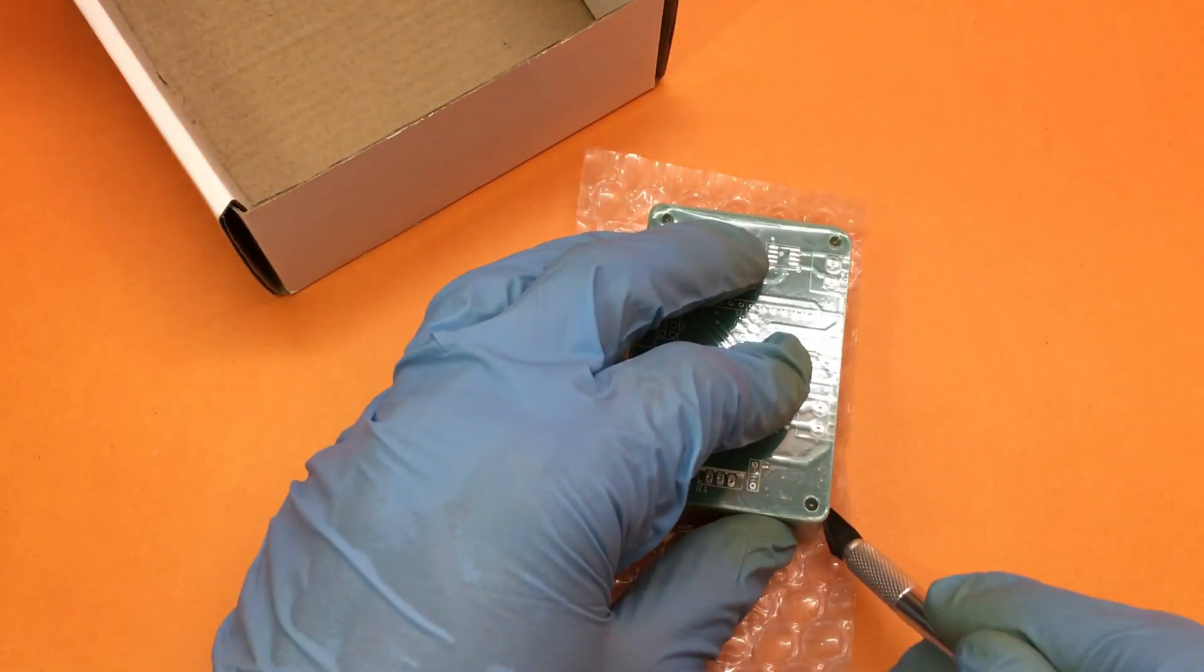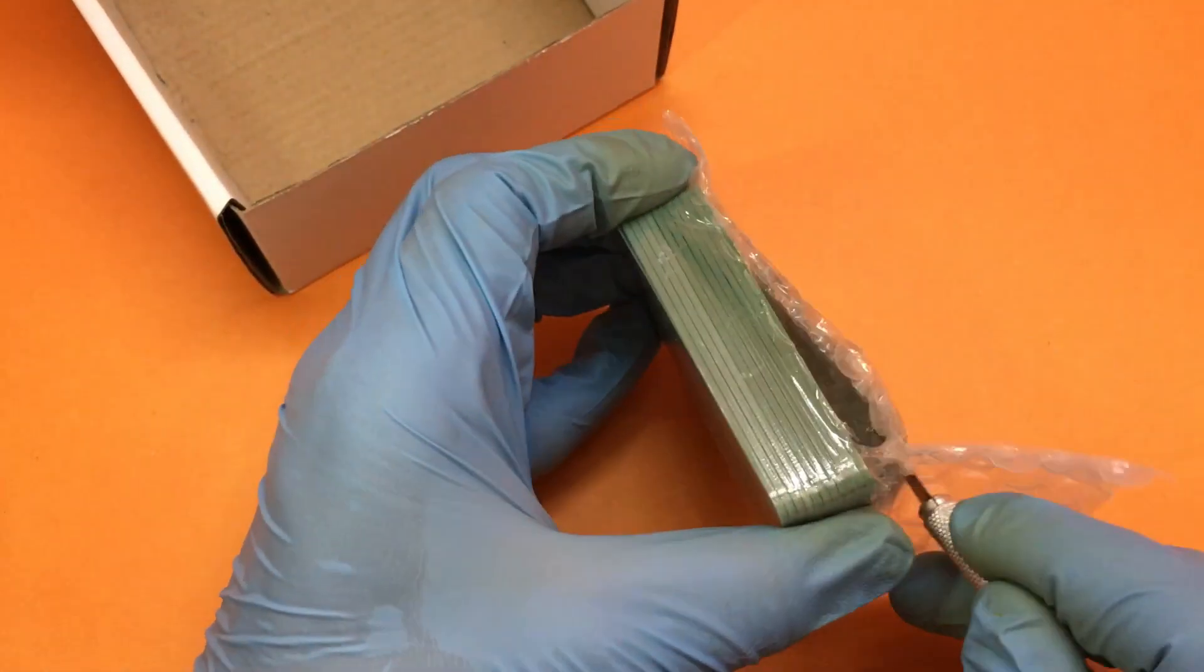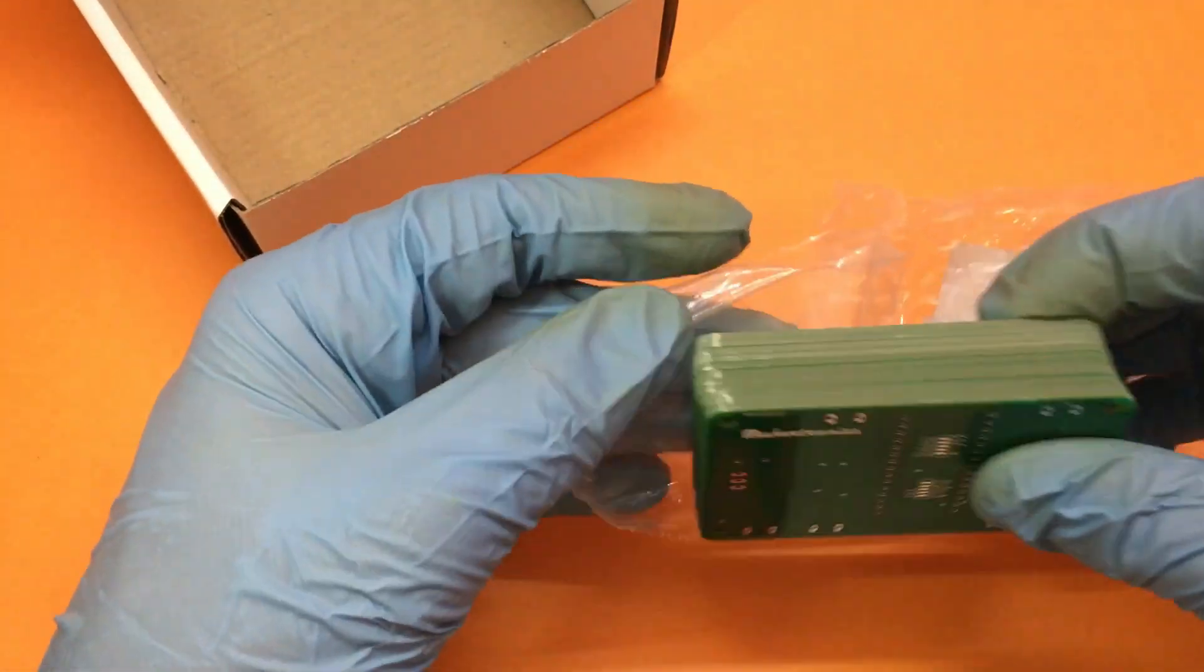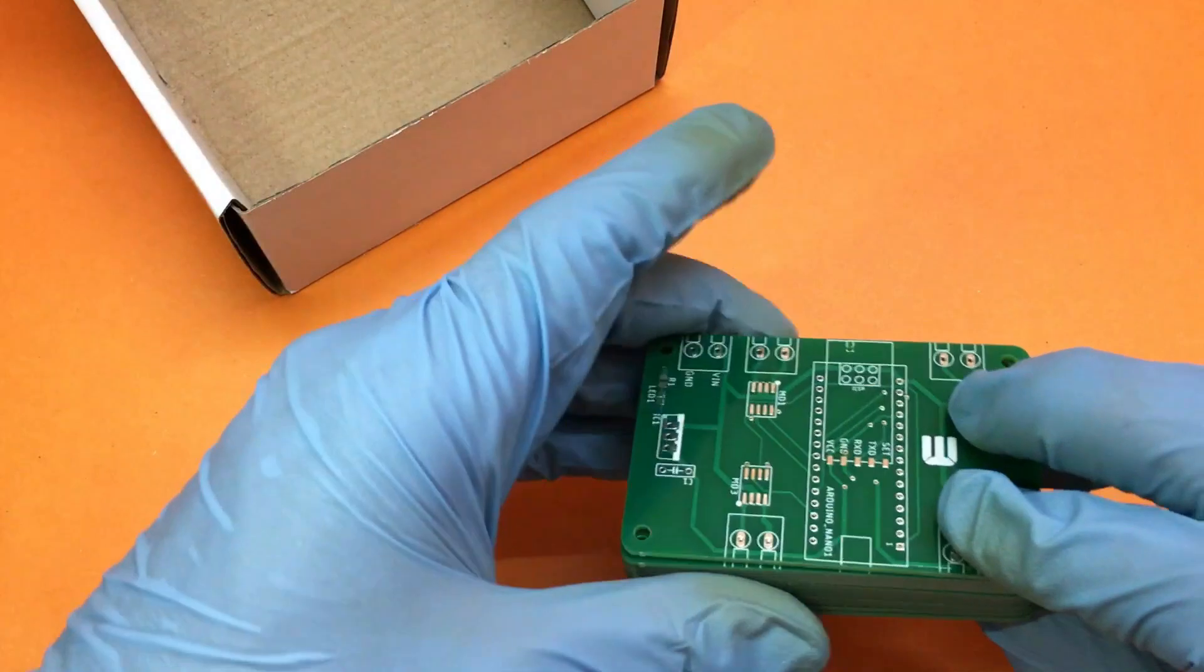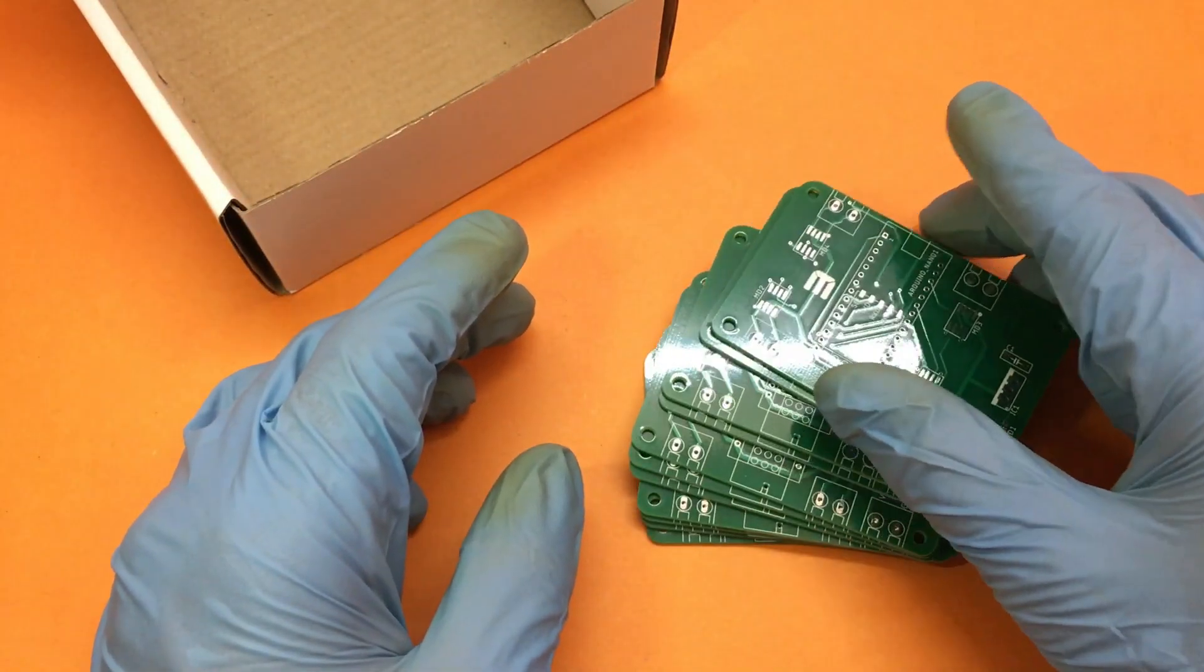For this project the PCBs are designed in such a way that the same PCB can be used for both transmitter and the receiver so you don't have to order separate PCBs. For the receiver side we will populate the motor drivers and for the transmitter side we will populate the joystick. The HC12 module and the Arduino Nano will be common for both.